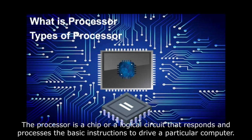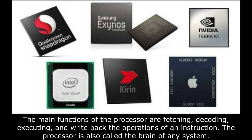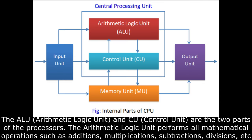What is a processor? The processor is a chip, or logical circuit, that responds and processes the basic instructions to drive a particular computer. The main functions of the processor are fetching, decoding, executing, and write back the operations of an instruction. The processor is also called the brain of any system. The ALU, arithmetic logic unit, and CU, control unit, are the two parts of the processor.